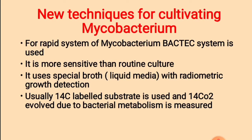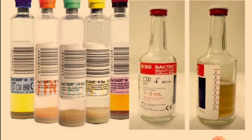New techniques for cultivating Mycobacterium tuberculosis: for a rapid system, the BACTEC system can be used. This system is very familiar nowadays in microbiological laboratories. It is more sensitive and more rapid than routine culture. It uses special liquid media with radiometric growth detection; a ¹⁴C-labelled substrate is used, and ¹⁴CO₂ evolved due to bacterial metabolism is measured. The BACTEC vial has a barcode which is read by the BACTEC system machine and contains a liquid culture.